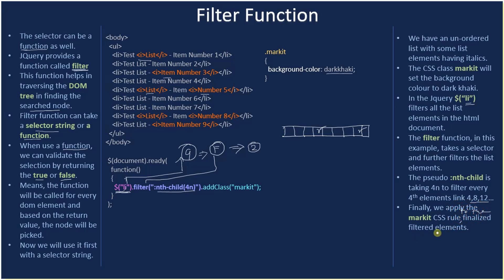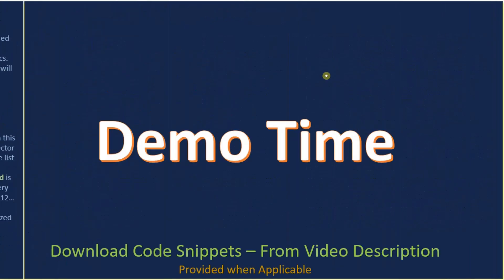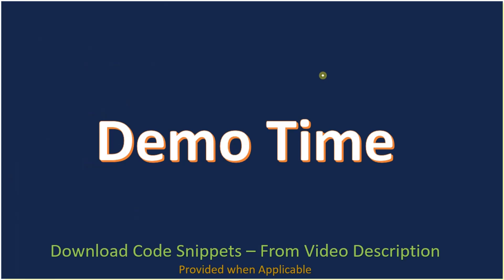Finally, we apply the 'mark' CSS rule to the finalized filtered elements. These two elements — the fourth and eighth — are picked, and we apply the mark CSS class so their background is set to dark khaki. Now we will go to the demo.